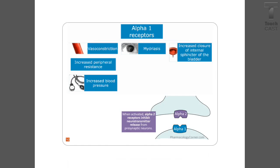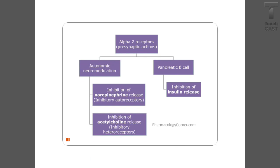We also have receptors called alpha-1, alpha-2, beta-1, and beta-2. Alpha-1 is found in our smooth muscles — it increases blood pressure and causes mydriasis, which is dilation of the pupils. Alpha-2 is found on the postganglionic sympathetic nerve endings and causes inhibition of norepinephrine, which leads to sedation and analgesia. It also causes a decrease in blood pressure and cardiac output.